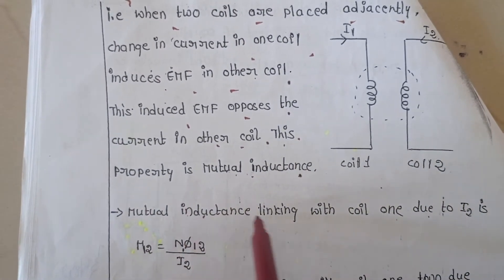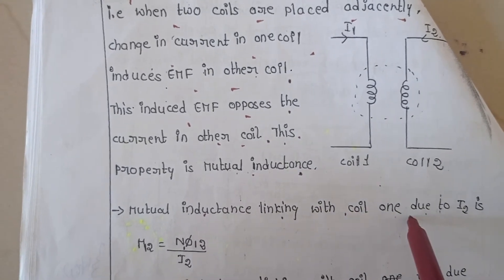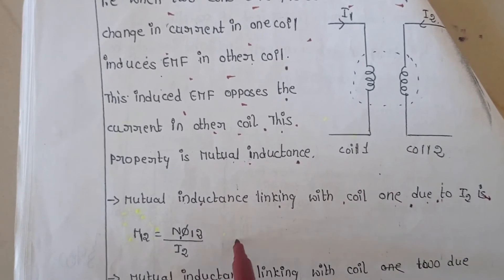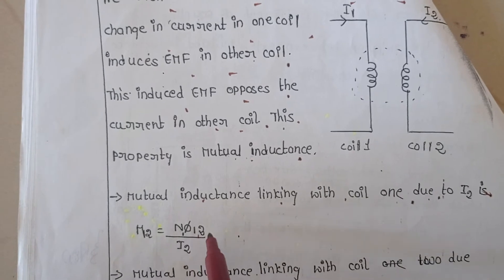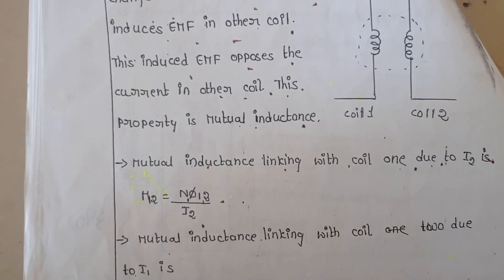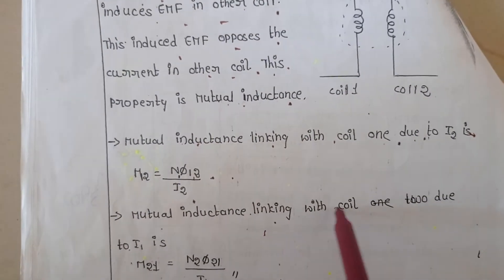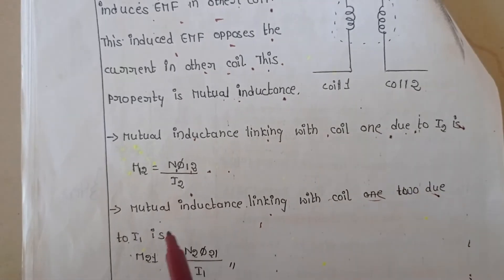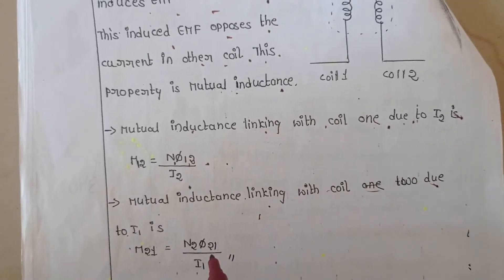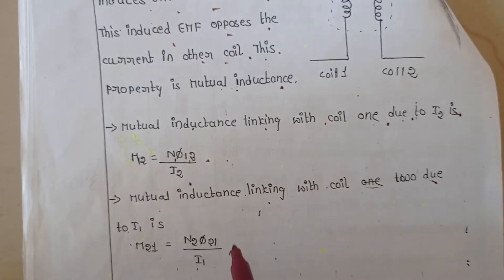Mutual inductance linked with coil 1 due to I2 is M12 equals N1·φ12 divided by I2. And mutual inductance linking with coil 2 due to I1 is M21 equals N2·φ21 divided by I1.